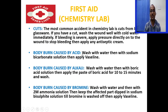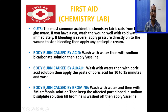If you have a body burn caused by acid spilling, wash it with water, then with sodium bicarbonate solution, then apply vaseline. If there is a body burn caused by alkaline spilling, wash with water, then with boric acid solution, then apply the paste of boric acid for 10 to 15 minutes and wash again. If there is a body burn caused by bromine spilling, wash it with water, then with 2 molar ammonia solution, then keep the affected part dipped in sodium bisulfite solution till bromine is washed out, then apply vaseline.